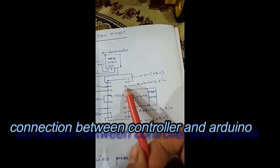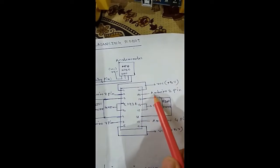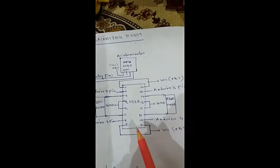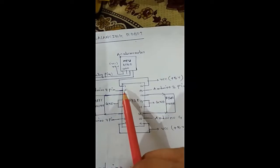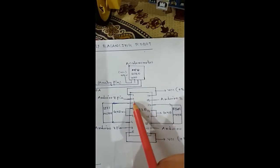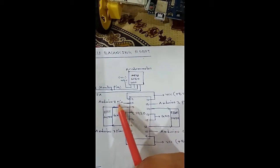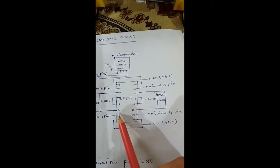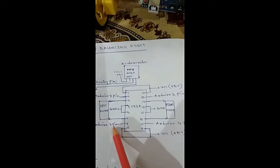And this 15 pin of this motor controller will be connected to the Arduino third pin, third pin means digital third pin. And this 10th pin is connected to the Arduino digital fourth pin. Same as here, the 7th pin of this motor controller will be connected to the 8th pin of the Arduino in the 8th digital pin. And the 2nd pin of the motor controller will be connected to the 7th pin of the Arduino board in the digital 7th pin.